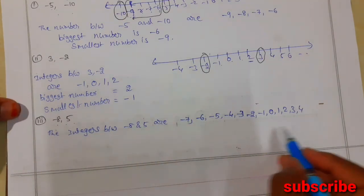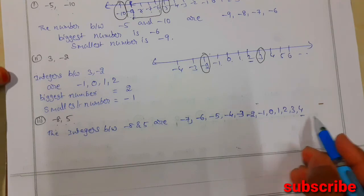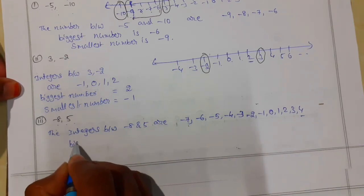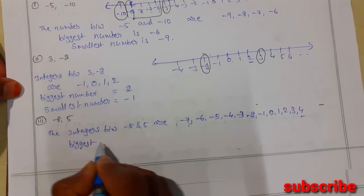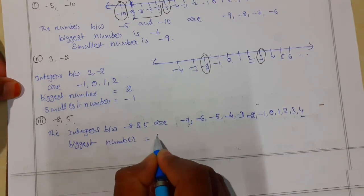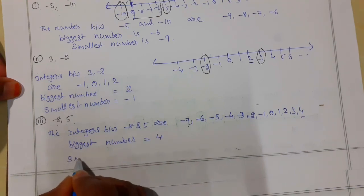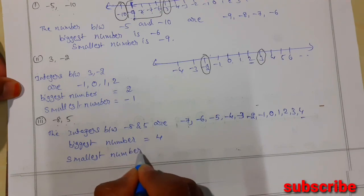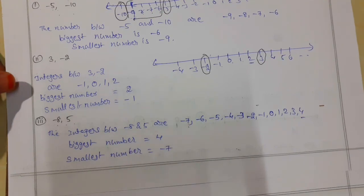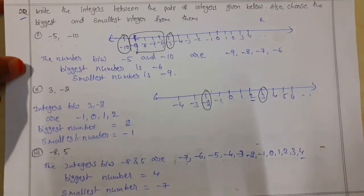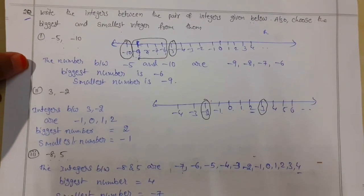In this list, the rightmost number is 4 and the leftmost number is minus 7. So the biggest number is 4 and the smallest number is minus 7. This is how to solve the second part of Exercise 1.1.